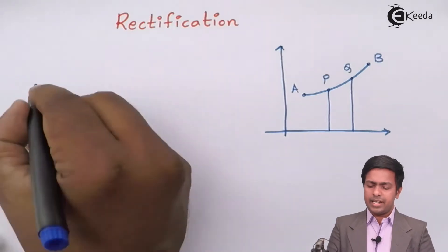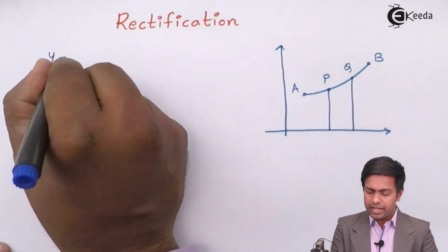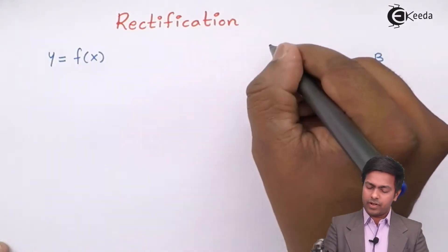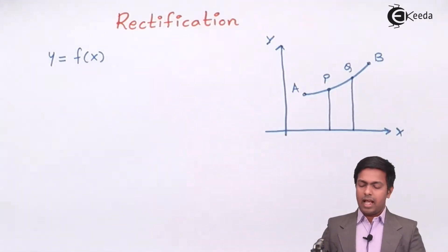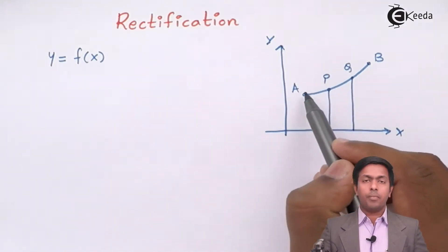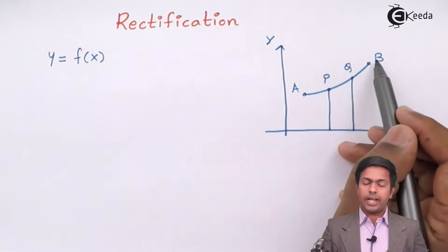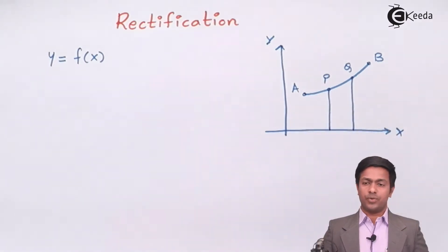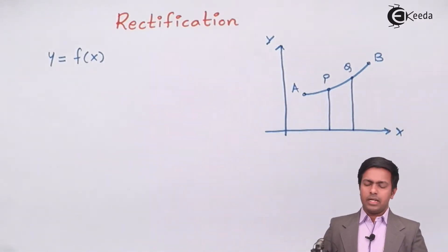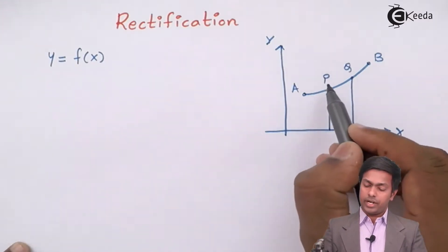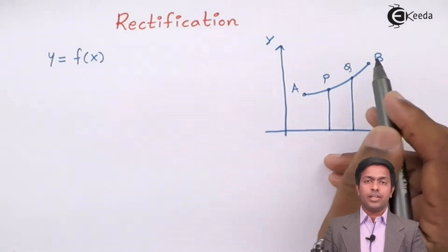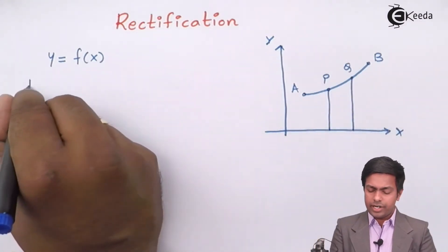Let's assume that the equation of the curve is y = f(x). This is the x-axis and this is the y-axis. Let's say A is a fixed point and from A to B we have to find out the length of the curve, or the length of this arc. We assume two points P and Q between A and B.